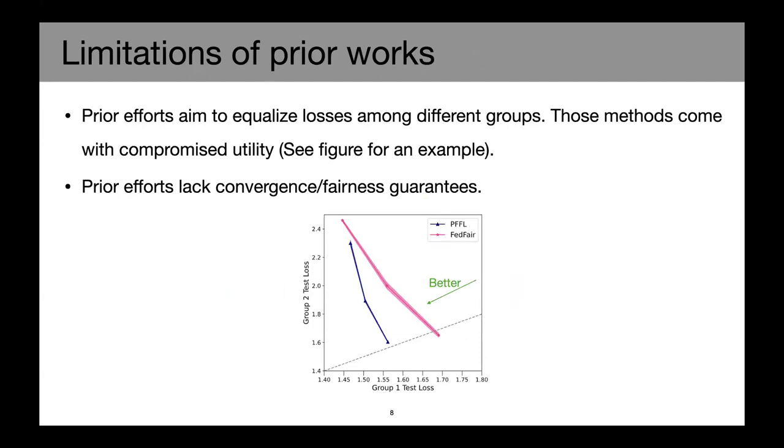Many prior works also have a few limitations and drawbacks. Most of the prior works aim to enforce equal prediction quality among different groups. However, these methods could have compromised utility. As an example, we perform a synthetic linear regression experiment where the data are separated into group one and group two.